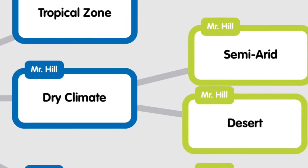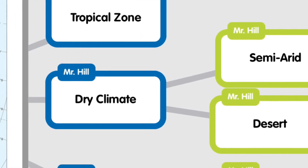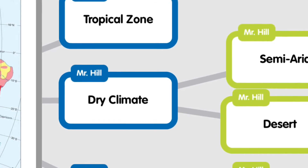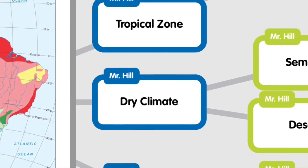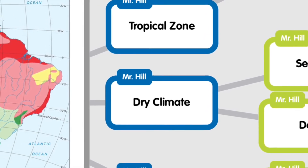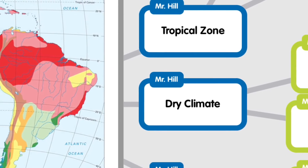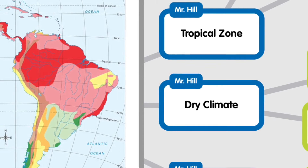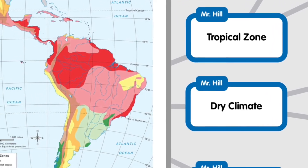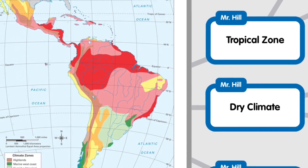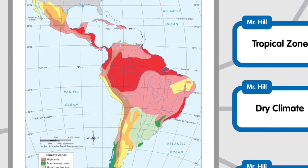Then you have dry climates — two different types: semi-arid and desert. In your semi-arid dry climate, you've got dry areas with a little bit of rain, found in parts of Mexico, Brazil, Uruguay, and Argentina, mainly made up of desert scrubs and some desert grasses. Then deserts, mainly found in northern Mexico and parts of Peru. You've got the Atacama Desert, which is again formed from the rain shadow effect of the Andes Mountains, and you're going to have desert waste here and a little bit of cactus.